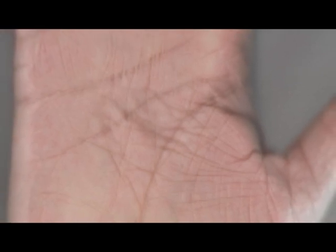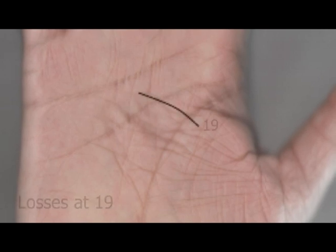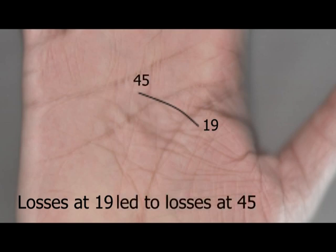Okay so let's put this together to see how karma has played out with his career. So he started working at the age of 19 because of a family obligation. That led directly to losses that he had with his Maggi noodle business at the age of 45 and you can see that on the Saturn line.